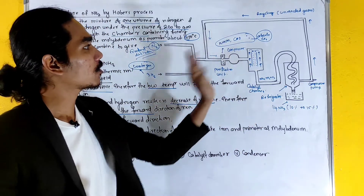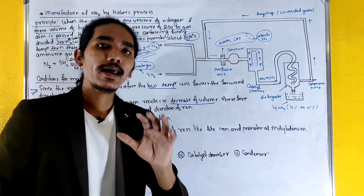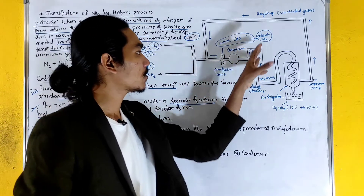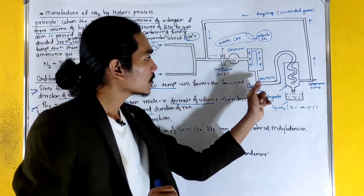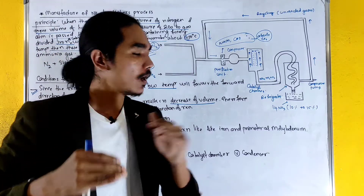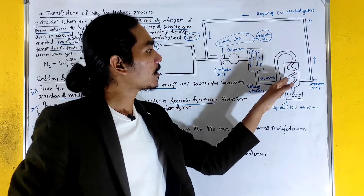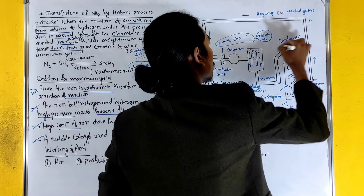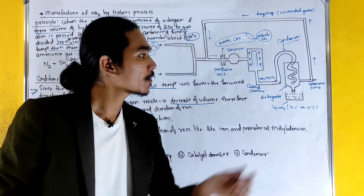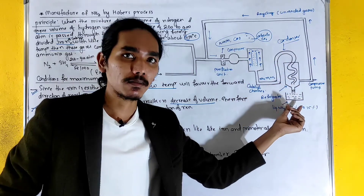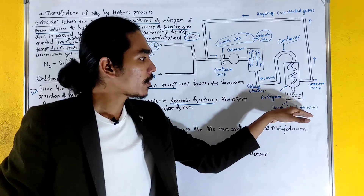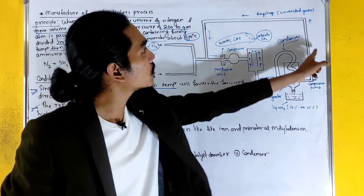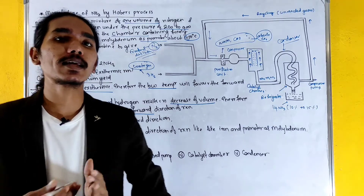We have nitrogen plus H2 and we have gas production. If we have production, we will use a condenser. We pass the gas through the condenser. The liquid NH3 is collected — about 10 to 15% yield. The unreacted gases, nitrogen and hydrogen, are recycled to produce further ammonia gas.